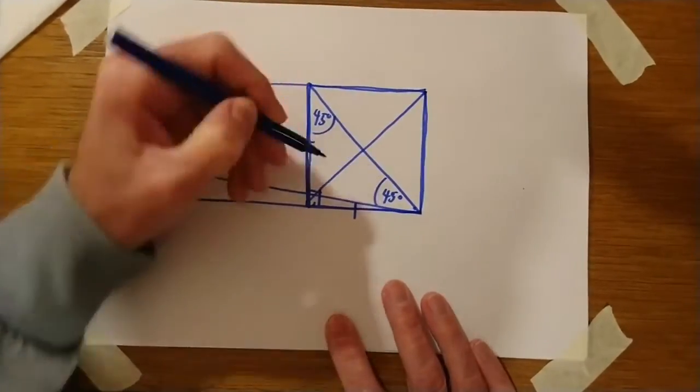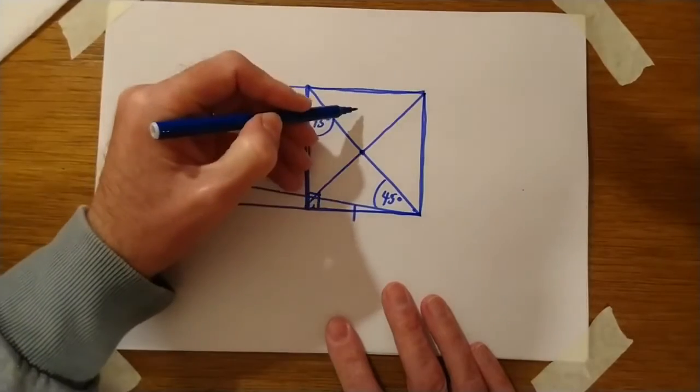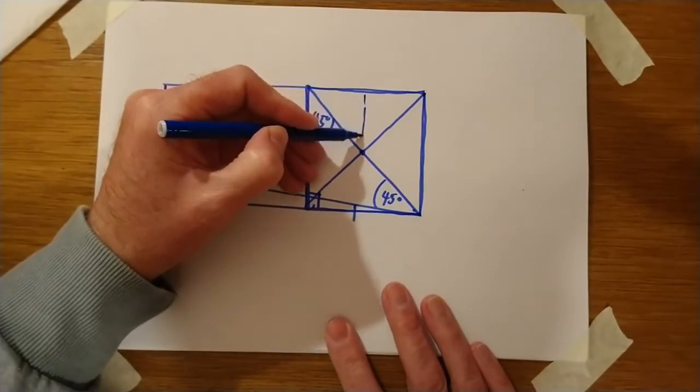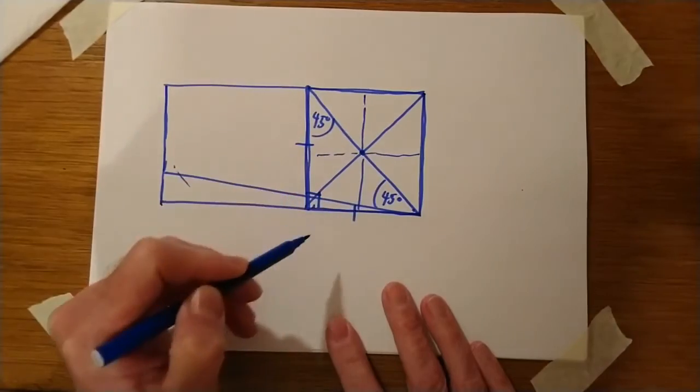If I draw in the other diagonal, then I've automatically located the center of the square, and if I needed to I could split that up vertically and horizontally as well.